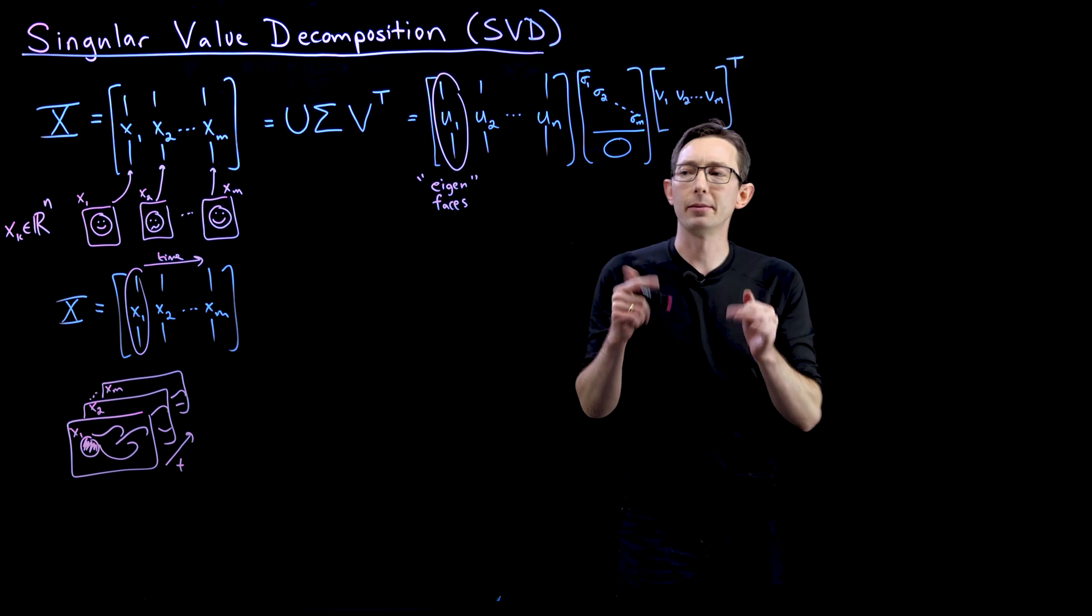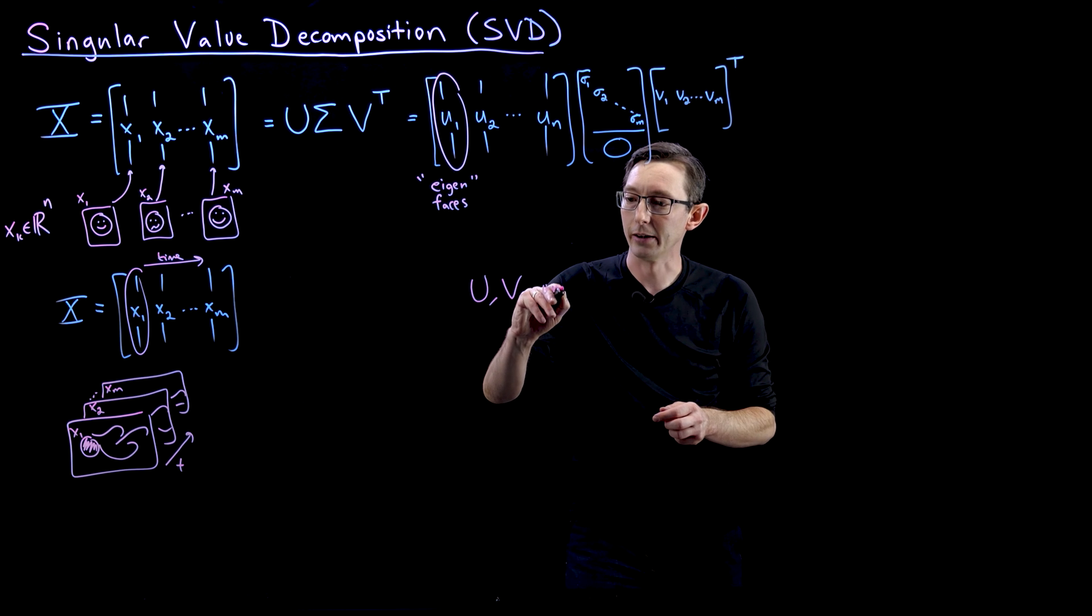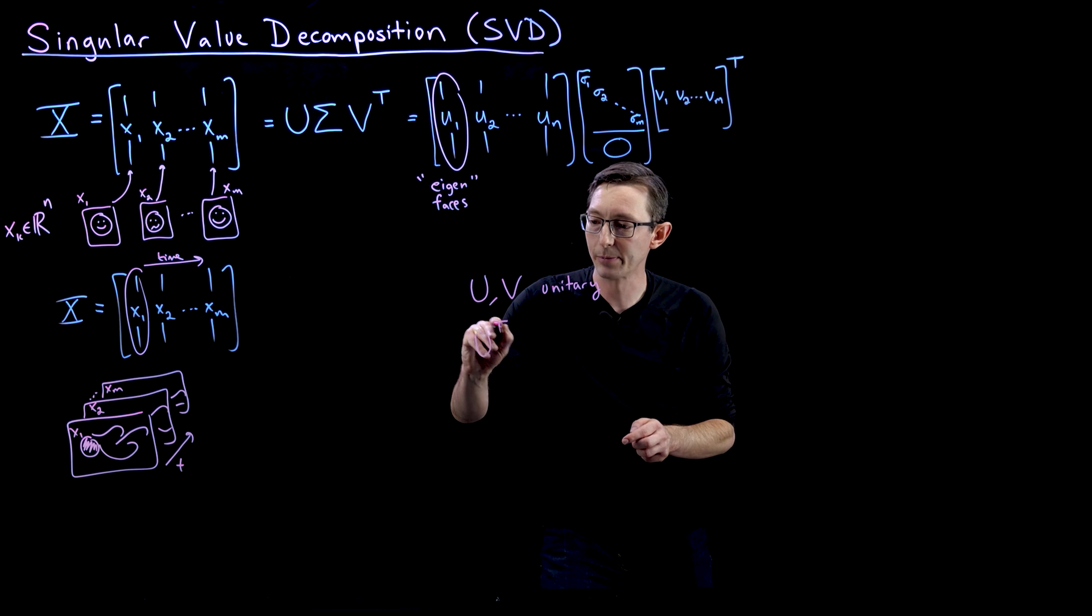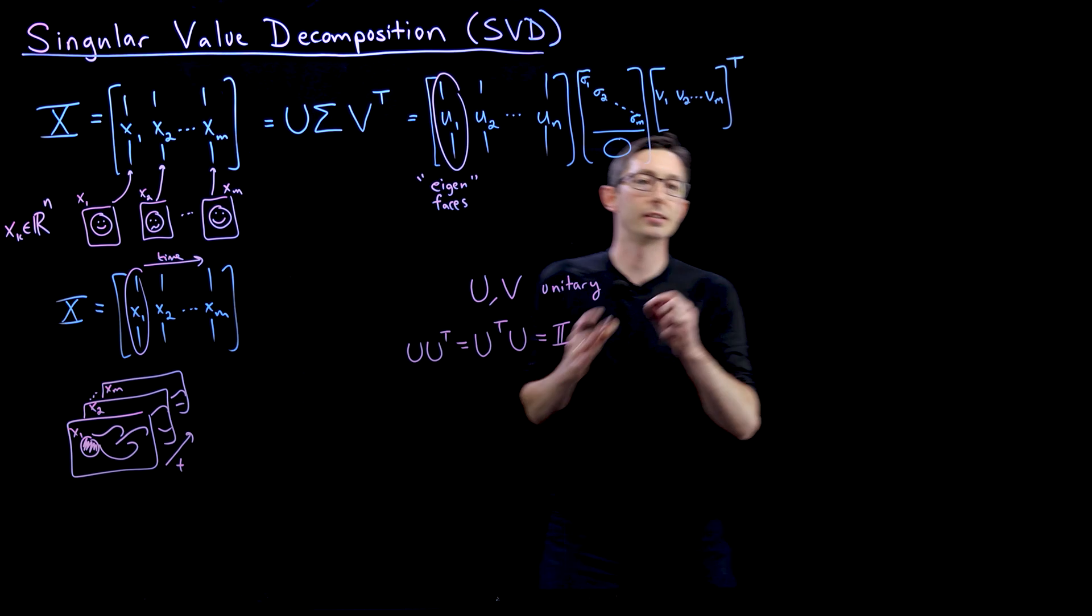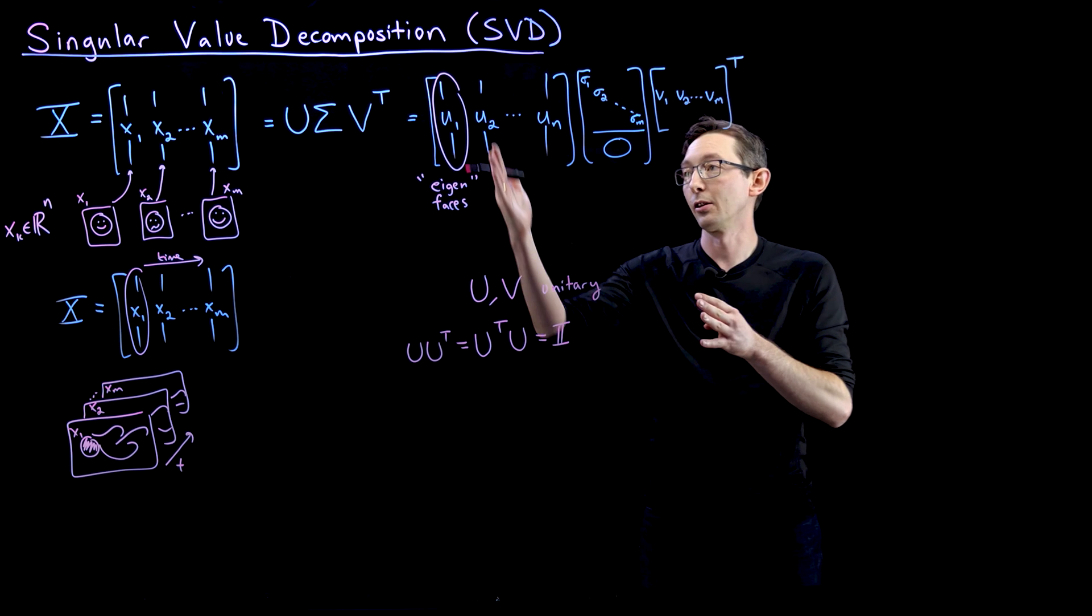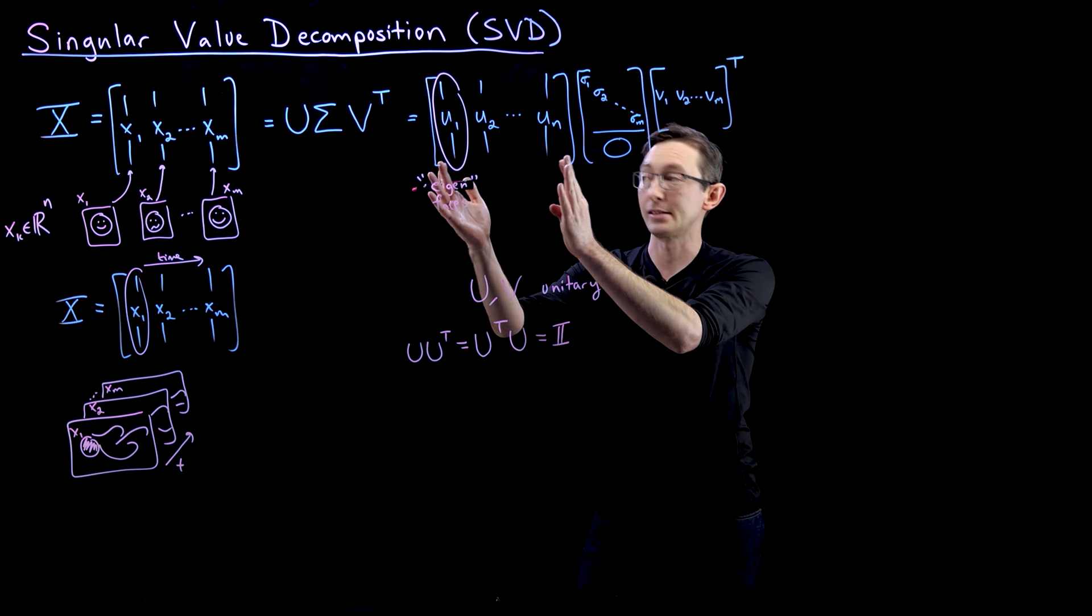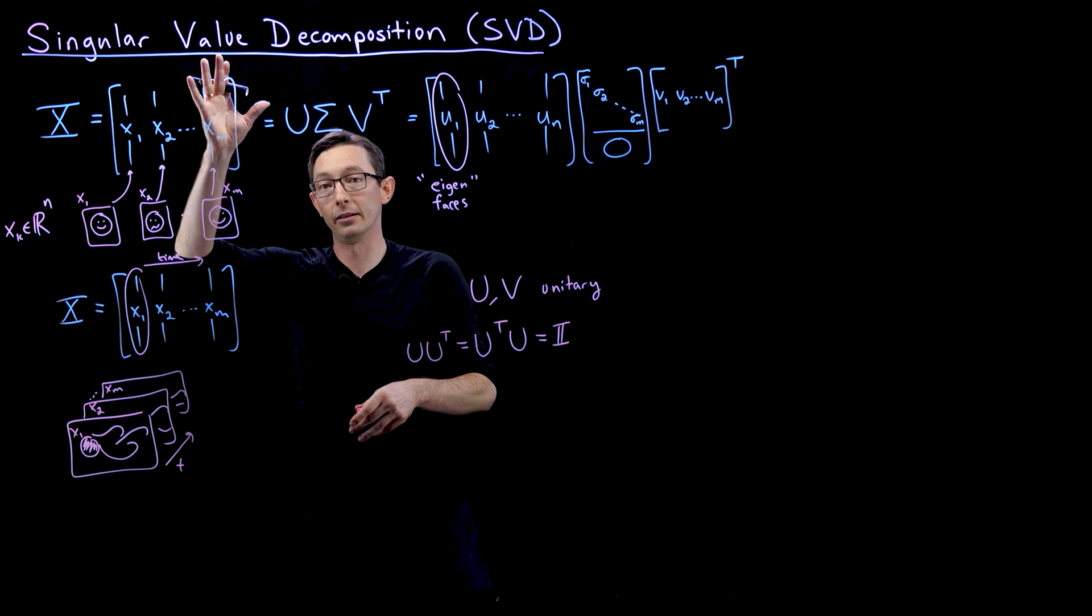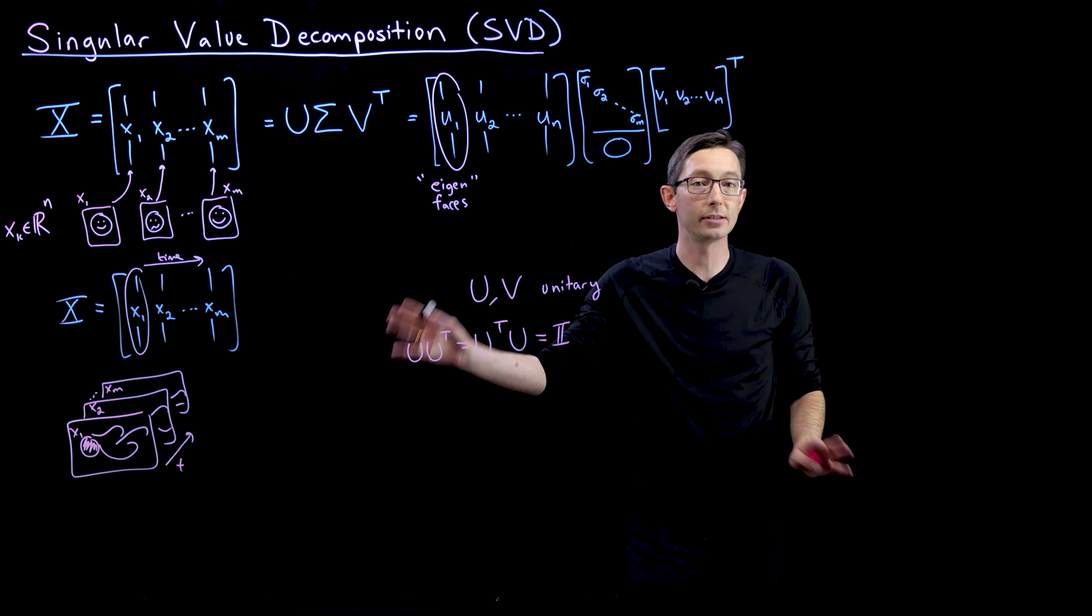So a couple of things I need to point out. So U and V are unitary. And essentially what that means is that U transpose U equals the identity, and so does U U transpose. So this matrix U, the columns are orthonormal. So they're all orthogonal and have unit length. And they provide a complete basis for all of R^n, for this n-dimensional subspace, or this n-dimensional vector space where the columns of my data live. So you have this property that U is orthogonal, and so its transpose is its inverse.